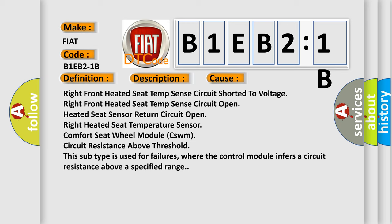Open heated seat sensor return circuit. Open right heated seat temperature sensor. Comfort seat wheel module (CSWM) circuit resistance above threshold. This subtype is used for failures where the control module infers a circuit resistance above a specified range.